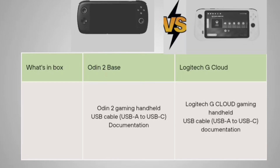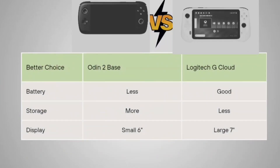What comes in the box: the Auden 2 Base includes the Auden 2 gaming handheld, USB-A to USB-C cable, and documentation. The Logitech G Cloud includes the Logitech G Cloud gaming handheld, USB-A to USB-C cable, and documentation.